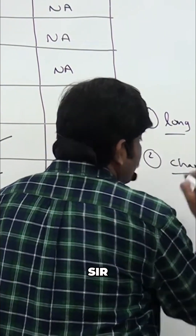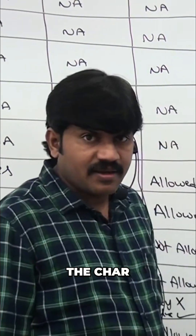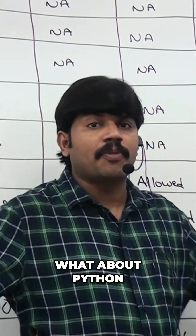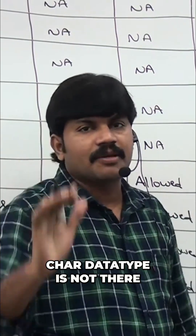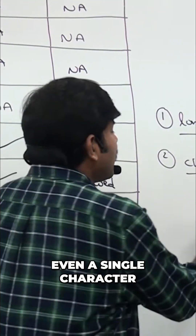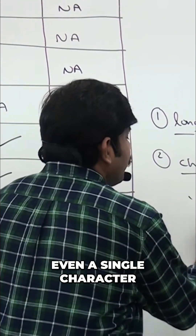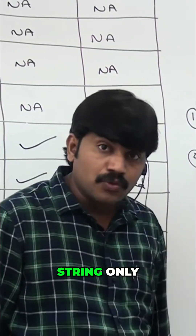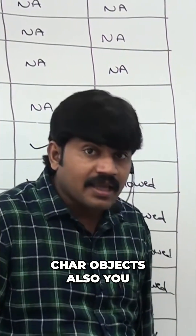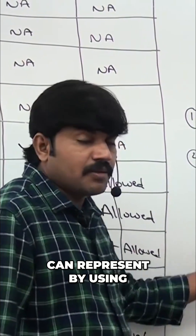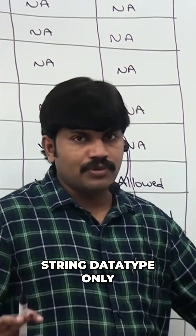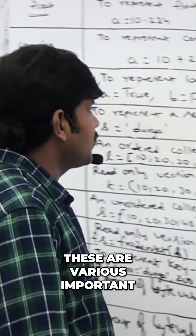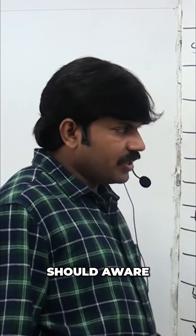What about the character data type? C, C++, and Java all have a char type, but Python does not have a character data type. Even a single character within single quotes is still treated as a string only. Character objects can also be represented using the string data type.